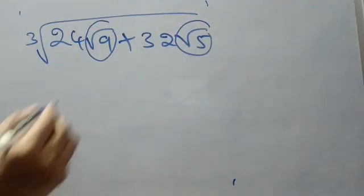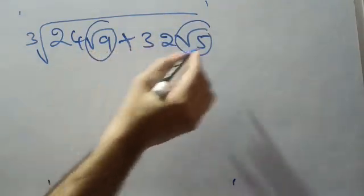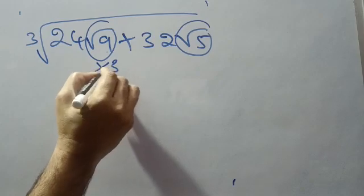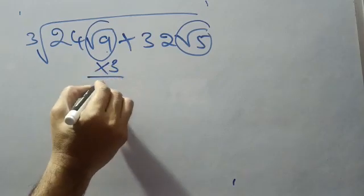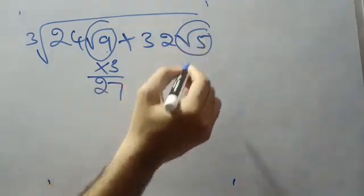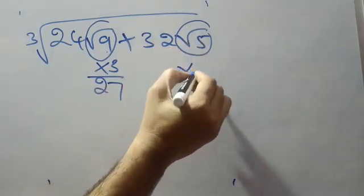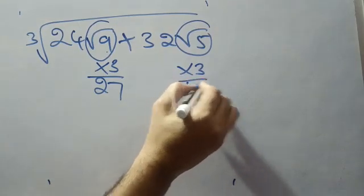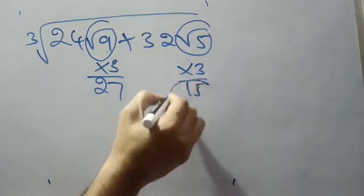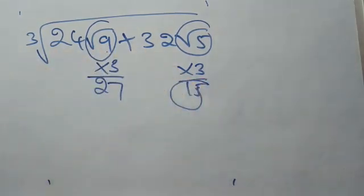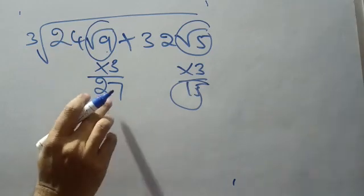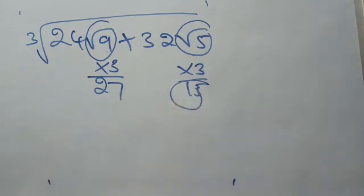What are the root values? 9 and 5. You multiply each by 3: 9 × 3 = 27, and 5 × 3 = 15. So multiplying 3 by the root values, you get 27 and 15.